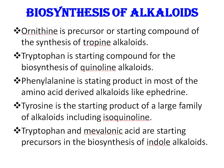Next is biosynthesis of alkaloids. Biosynthesis of different groups of alkaloids has been investigated using precursors labeled with radioactive atoms — precursors like ornithine, tryptophan, phenylalanine, tyrosine, etc. Ornithine is an amino acid and a precursor for the synthesis of tropine alkaloids. Tryptophan is a starting compound for the synthesis of quinoline alkaloids. Phenylalanine is a starting product in most amino acid-derived alkaloids, like ephedrine. Tyrosine is the starting product of a large family of alkaloids including isoquinoline. Tryptophan and mevalonic acid are starting precursors in the biosynthesis of indole alkaloids.